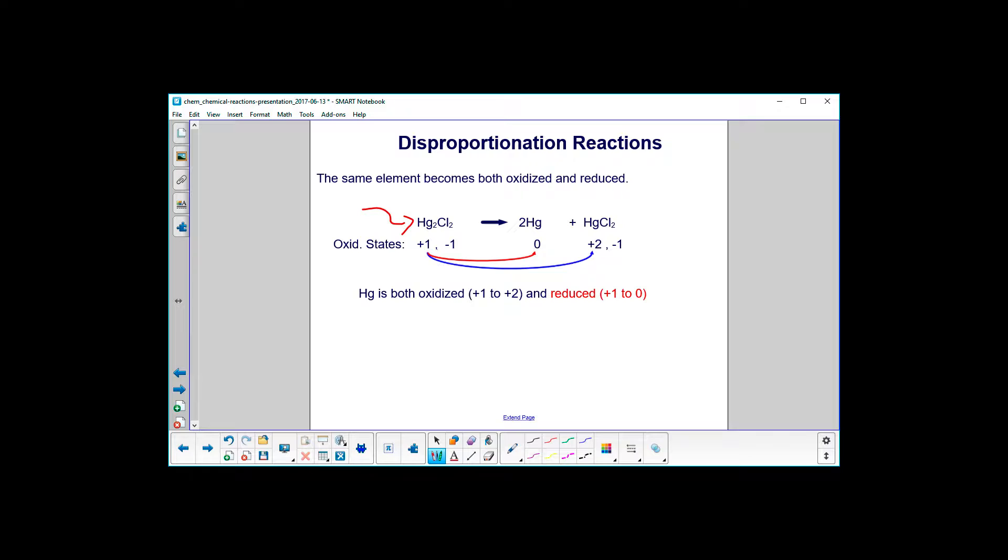In the mercury chloride at the beginning here, chlorine is negative one, there's two of them, so that means the two mercuries have to equal plus two. You divide by two because there's two of them, and you get an oxidation state of plus one for the mercury.